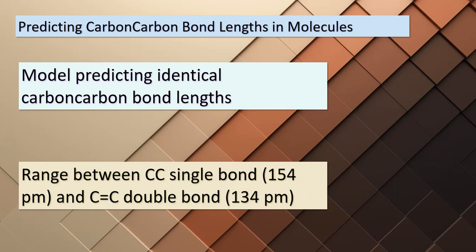Today we're delving into the fascinating realm of chemical bonds and molecular structures, focusing on the intriguing prediction about carbon-carbon bond lengths. Our model suggests that all carbon-carbon bond lengths in benzene will fall between that of a single C–C bond, measuring around 154 picometers, and a double C=C bond, measuring approximately 134 picometers. This prediction beautifully aligns with the observed carbon-carbon bond length in benzene — each C–C bond stretches about 140 picometers, showcasing the harmony between theory and reality.